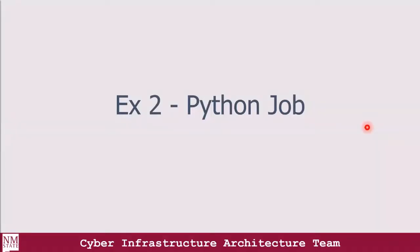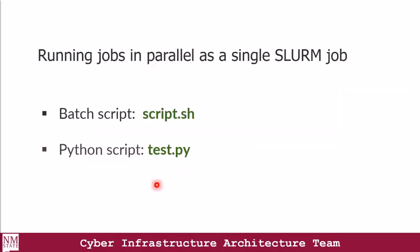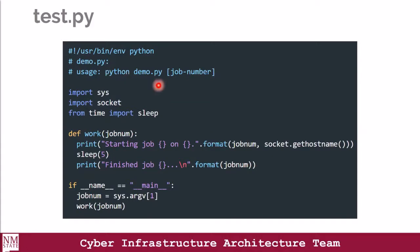For this next example, we're going to submit a Python job. The root directory contains the test.py, which is our Python script, and script.sh is the script that gets submitted to Slurm. Our main focus is the script.sh and the test.py file. In our Python script, the script gets the ID of the job number that has been processed, gets the host name, sleeps for five minutes, and then shows the message 'finish job' and the job number to the console.